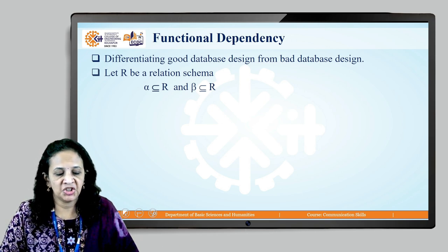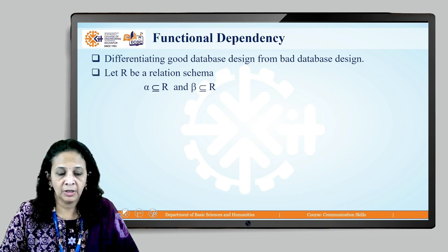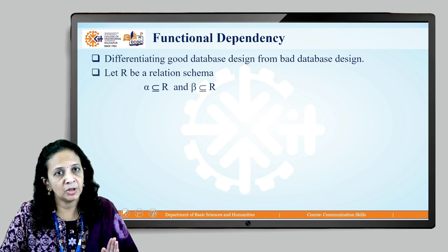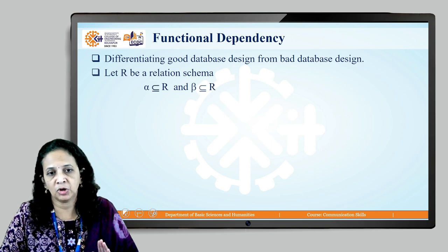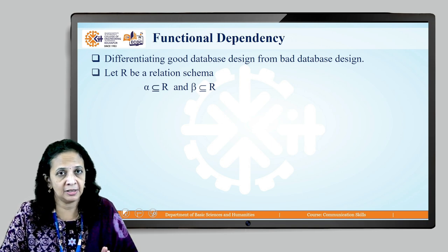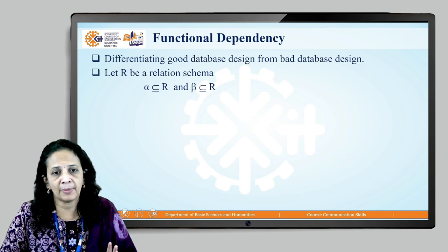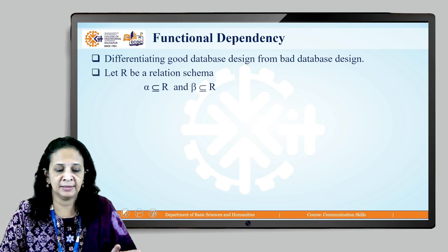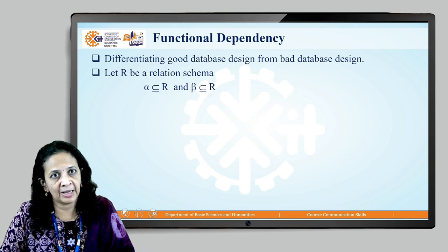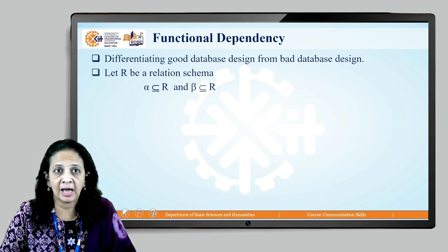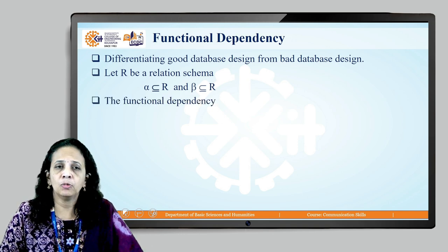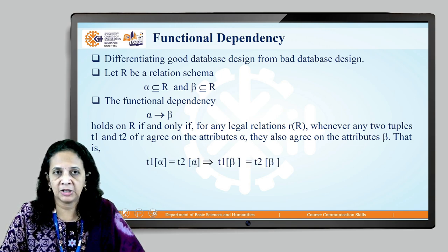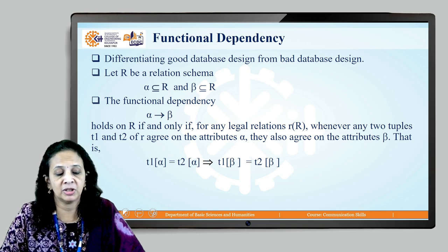Let R be a relation schema with some number of attributes. Alpha is a subset of R and beta is a subset of R — alpha has some attributes from the relation while beta has some attributes from the relation; they need not be single attributes. For example, in a staff-branch relation, alpha may be staff number and name, while beta may be position and salary. The functional dependency is denoted as alpha → beta.